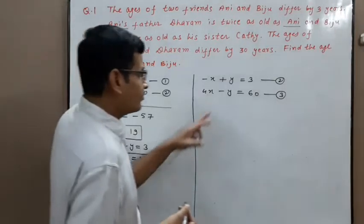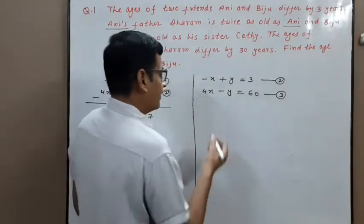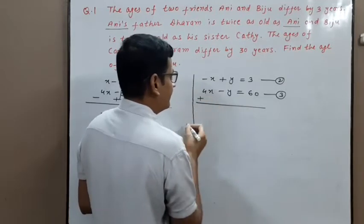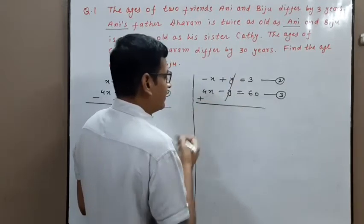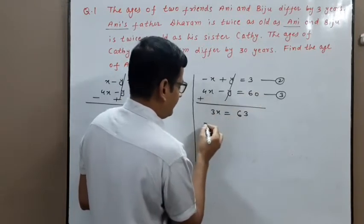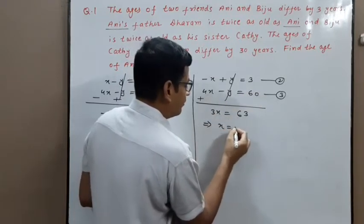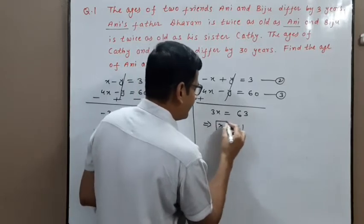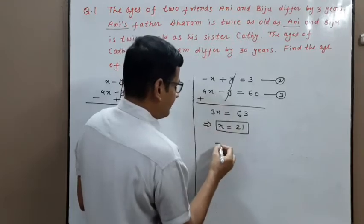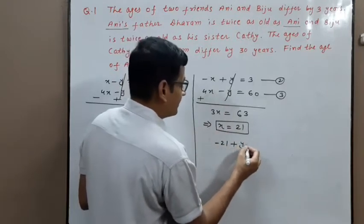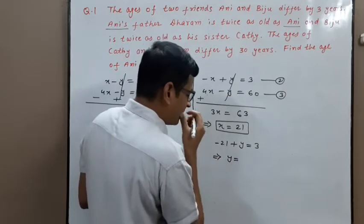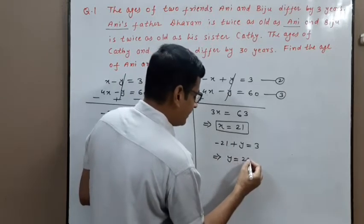For the second case, using equations 2 and 3, adding equation 2 and equation 3: Y terms cancel, 3X equals 63, so X equals 21. Age of Ani is 21. Substituting back into equation 2: minus 21 plus Y equals 3, so age of Biju is 21 plus 3 equals 24.